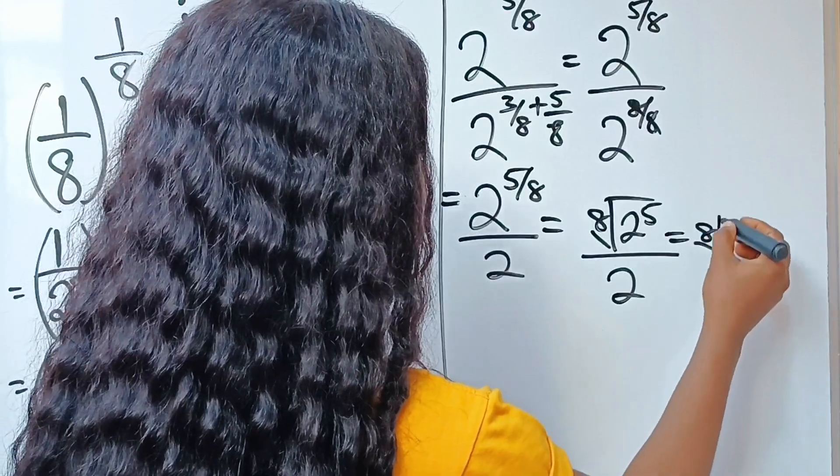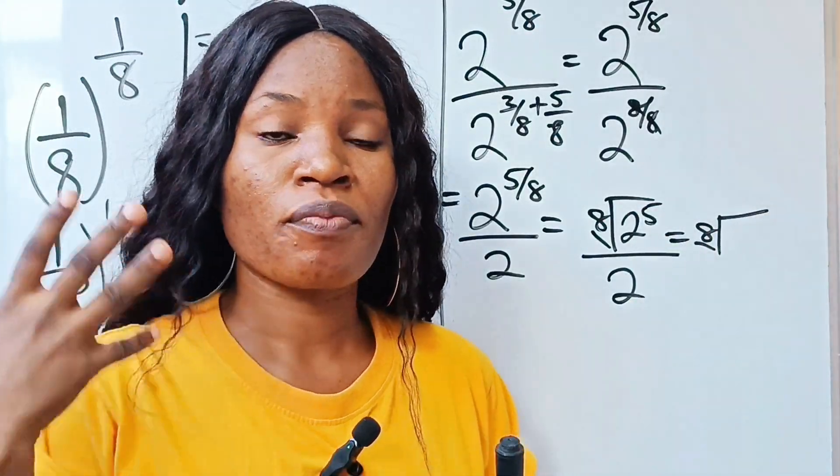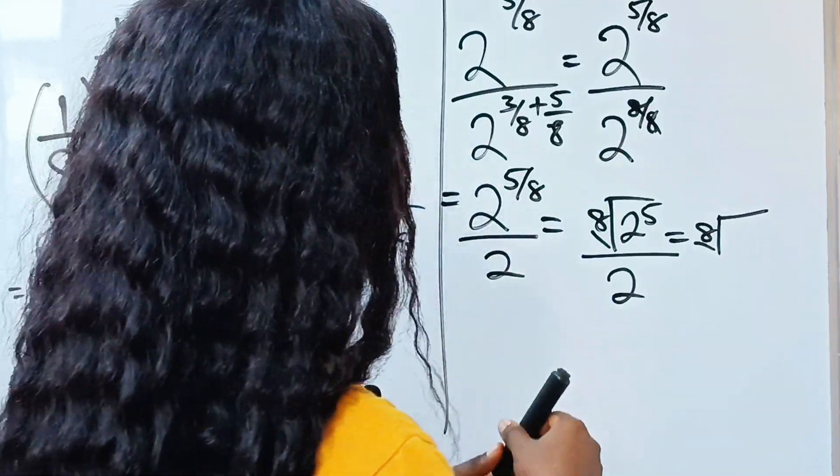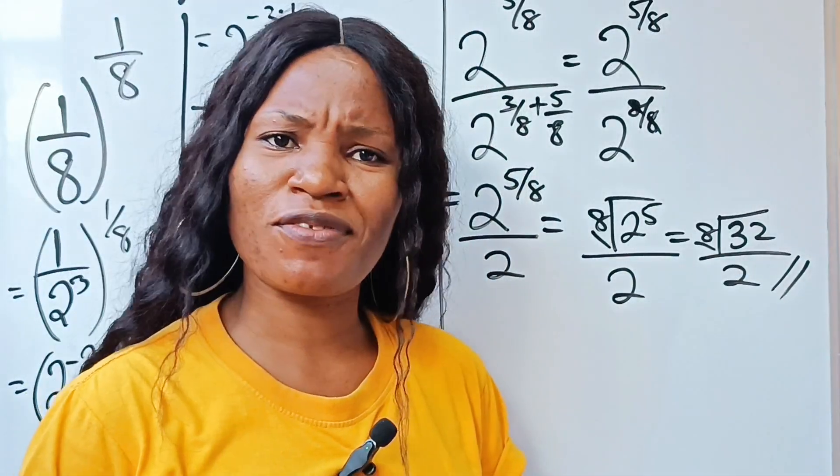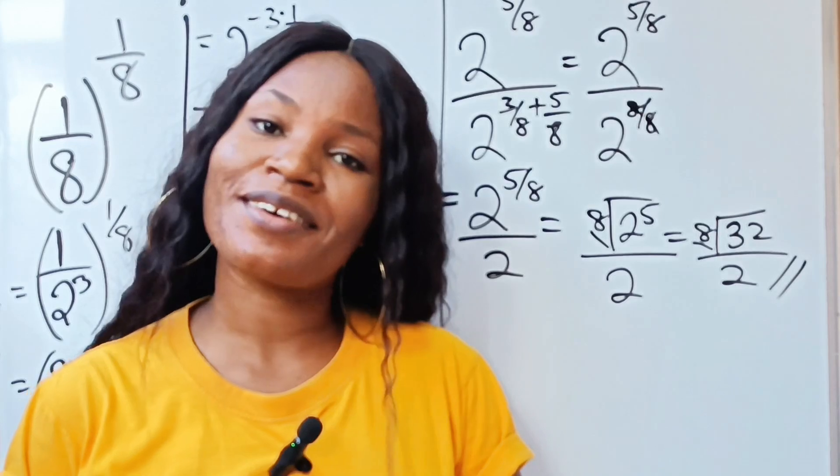This is the same thing as the 8 root of 2 to the power of 5. If you multiply 2 by itself into 5 places, you get 32 divided by 2. And I think this is the simplest form we can get. Thank you so much for watching and have a lovely day.